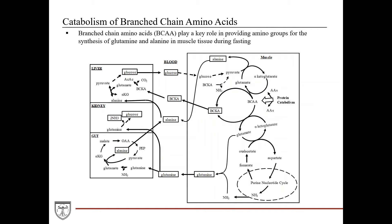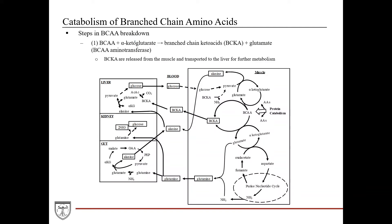Branched-chain amino acids play a key role in providing amino groups for the synthesis of glutamine and alanine in muscle tissue during fasting. Looking at this figure of muscle tissue from your book, here you can see transamination occurring, with glutamate being produced, which is then used for glutamine synthesis and also combined with pyruvate to produce alanine. In this first step — transamination — branched-chain amino acids donate their amino group to alpha-ketoglutarate, generating glutamate and branched-chain keto acids. The keto acids are exported into the blood and go to the liver for further metabolism.